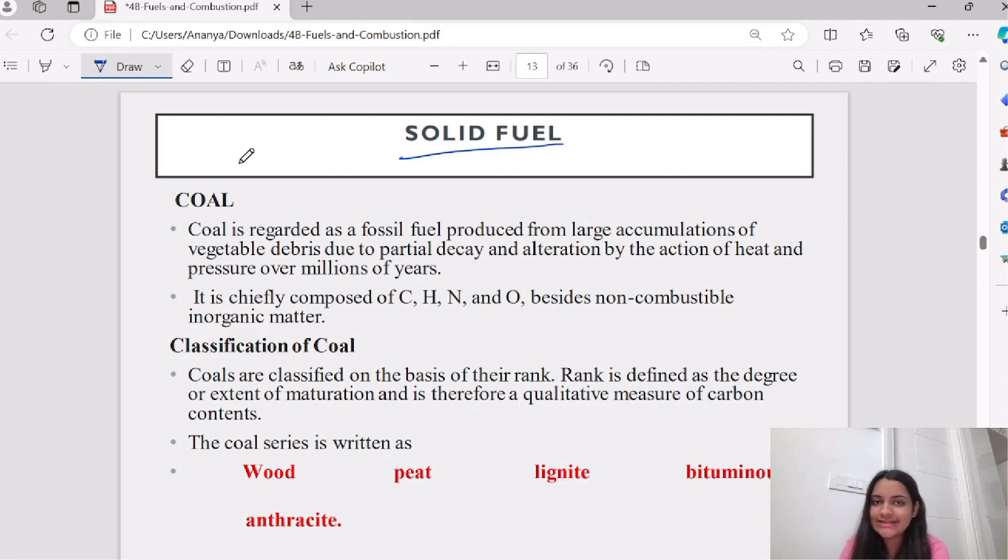We will analyze both its approximate and ultimate analysis. Coal is called a fossil fuel because it is produced from the large accumulation of vegetable waste. When it is decayed by the action of heat and pressure after thousands of years, coal is formed. That is why it is called fossil fuel.